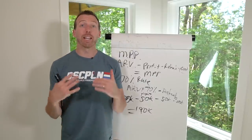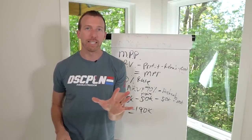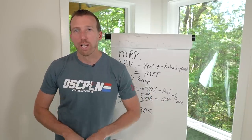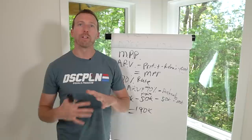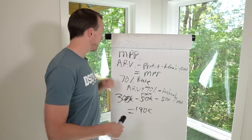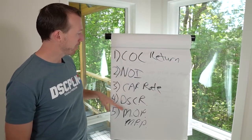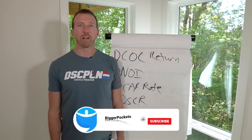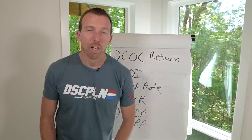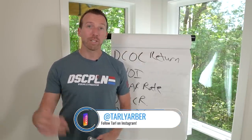That was a lot, guys. I went into a lot of detail for those five equations that I use every single day in my business. There are more out there — IRR (Internal Rate of Return), Gross Rent Multiplier, and others — but at the end of the day it comes back to these five: Cash on Cash Return, NOI, Cap Rate, DSCR, and Max Purchase Price. Going back to the fundamentals is more important than ever. I'm Tarl Yarbrough — make sure you comment, like, and subscribe here on the video with BiggerPockets, and I'll see you on the next one.